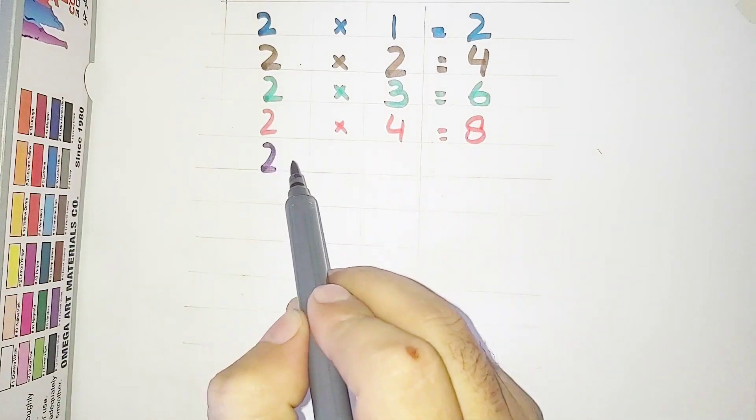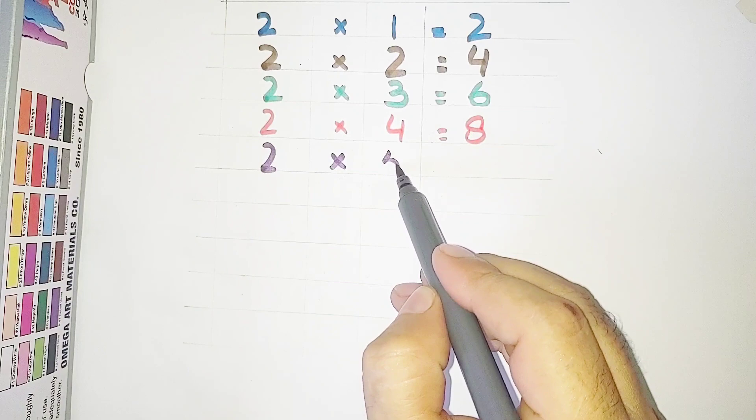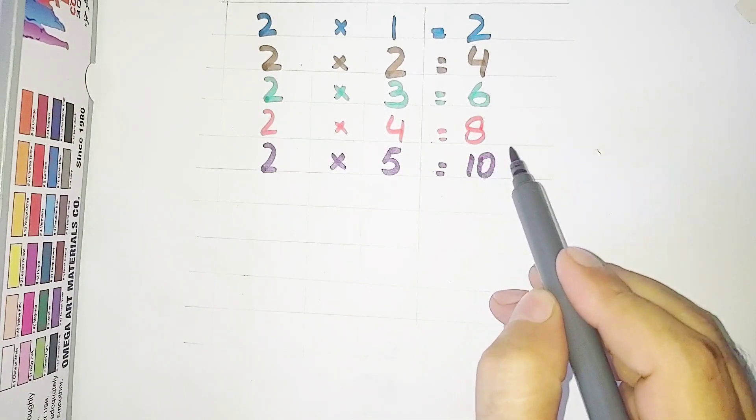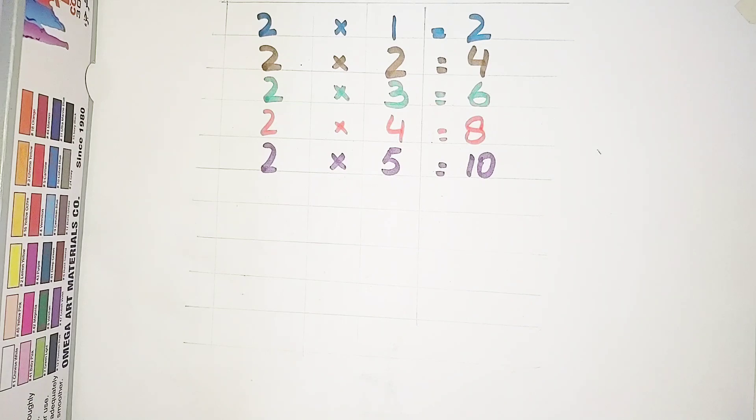2 multiplied by 5 is equal to 10. 2 fives are 10. Very good.